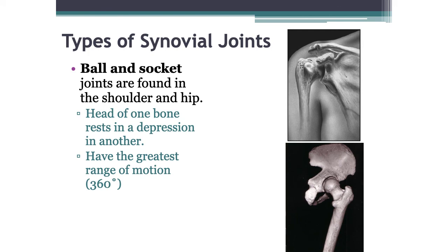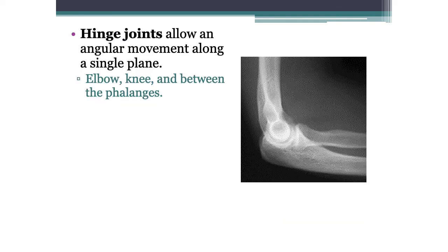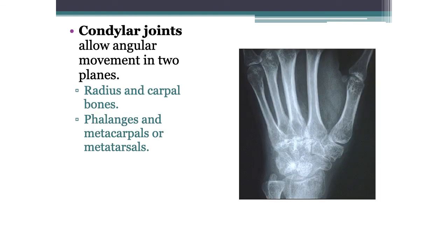Types of synovial joints: ball-and-socket joints are found in the shoulder and hip, where the head of the bone rests in a depression and they have the greatest range of motion. Hinge joints allow movement along a singular plane — the elbow, knee, and between the phalanges of fingers and toes. Condylar joints allow movement in two planes, such as the radius and carpal bones, or the phalanges and metacarpals or metatarsals.